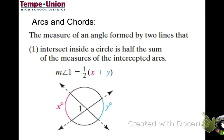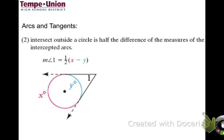The first theorem: whenever you have two chords that intersect, they create angles and intercept arcs. Each of those angles is equal to one-half of the sum of the two intercepted arcs. So you take the two arcs, add them together, divide by two, and that gives you the angle measure. The two angles formed are vertical angles, so they're equal.